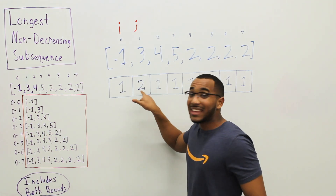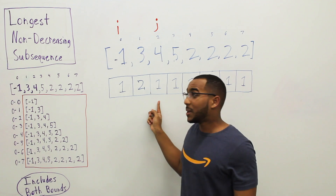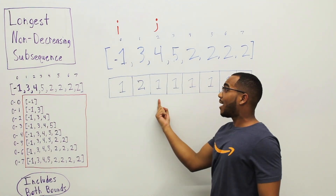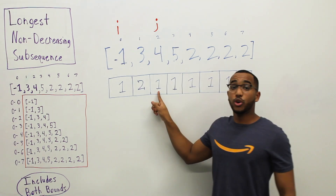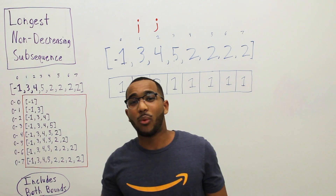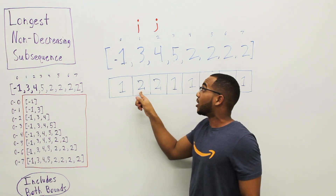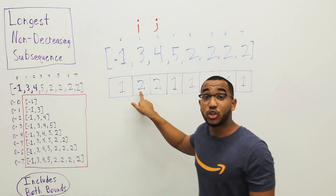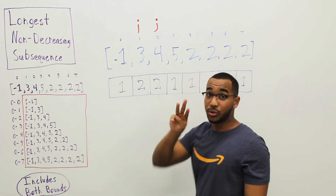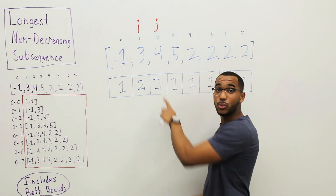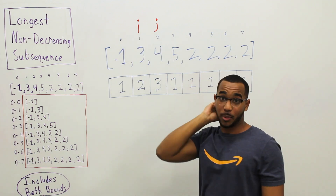Now we move on and work on the subproblem of the snippet going from 0 to 2: negative 1, 3, 4. Can 4 extend the longest sequence at index 1? Yes, because 4 is greater than 1. We do 1 plus 1, which is 2. So we put 2 here and advance I. Can we lengthen the longest one found up to index 1? Yes, because 4 is greater than 3. The answer there is 2, and 2 plus 1 is 3. Competing 3 against 2, 3 wins. I has hit against J — we've compared every subproblem rooted at J. The answer for the subproblem of the array from 0 to 2 is 3.